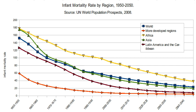Many factors contribute to infant mortality, such as the mother's level of education, environmental conditions, and political and medical infrastructure. Improving sanitation, access to clean drinking water, immunization against infectious diseases, and other public health measures can help reduce high rates of infant mortality.